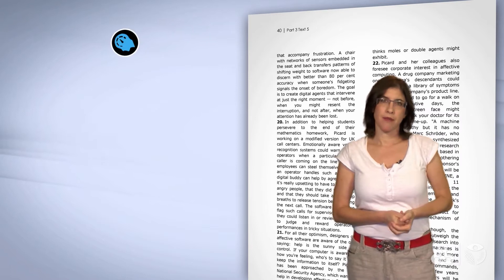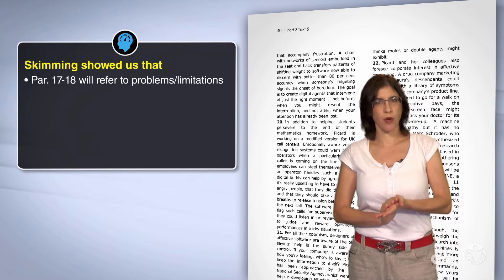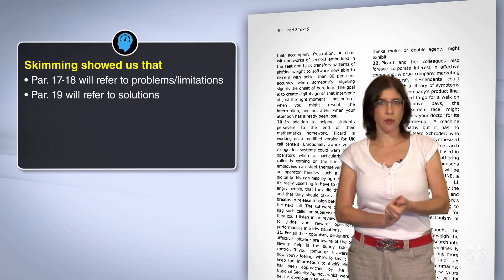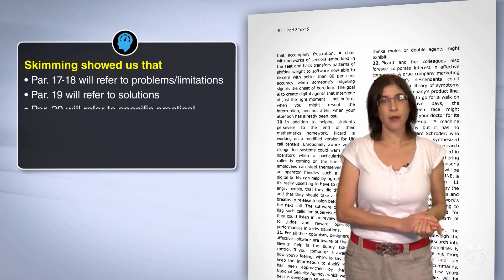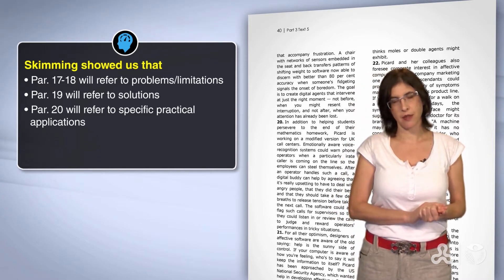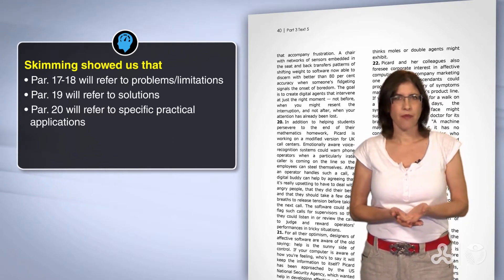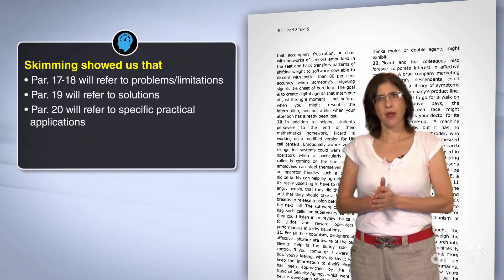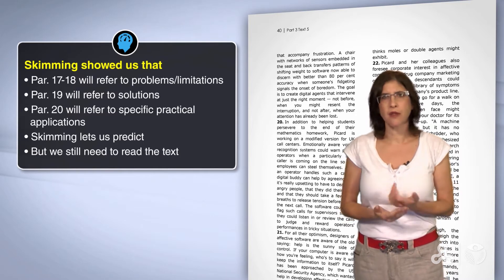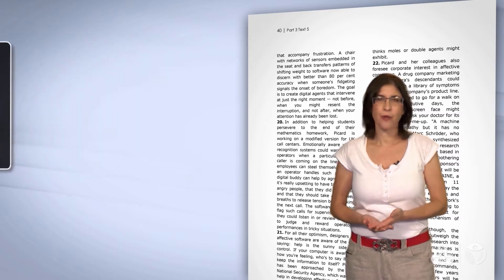Let's sum up our skimming. Paragraphs 17 through 18 will probably refer to problems or limitations. Paragraph 19 will probably refer to solutions. And paragraph 20 will probably refer to specific practical applications. Why do I say probably? Because this is only the skimming — it lets us predict, but we still need to read the text.